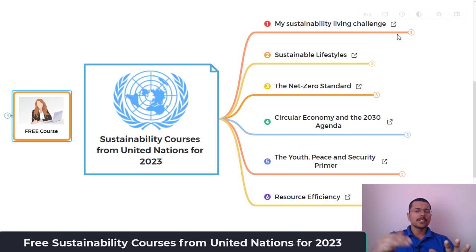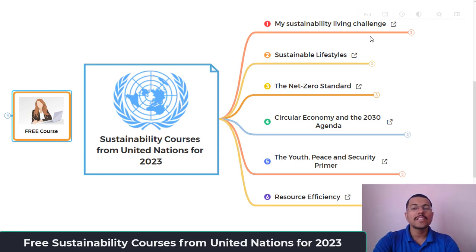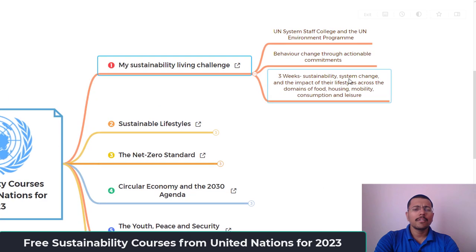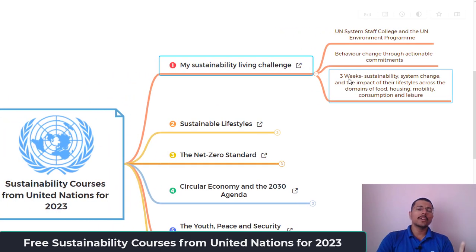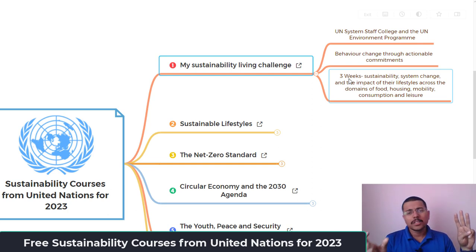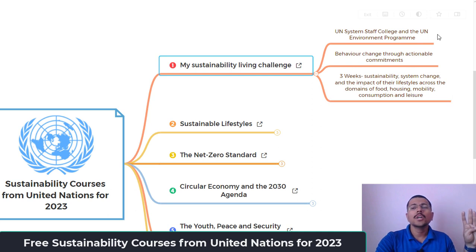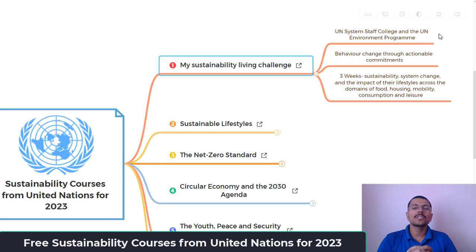Let's discuss six courses — there are other courses as well, and you can see all the details in the description. The first course is 'My Sustainable Living Challenge.' For every course we will discuss three points: who is providing it, what is the main theme, and the duration and topics covered. This course is from the United Nations System Staff College and the UN Environment Programme (UNEP).